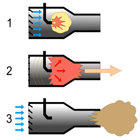There are two main types of pulsejet engines, both of which use resonant combustion and harness the expanding combustion products to form a pulsating exhaust jet that produces thrust intermittently.